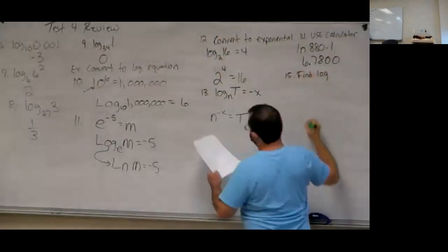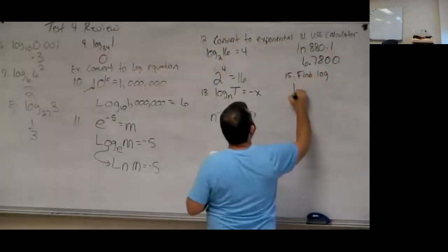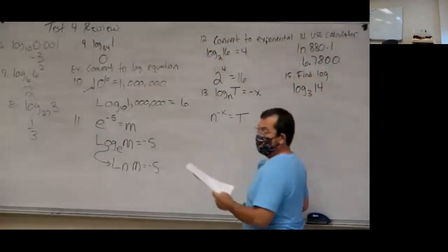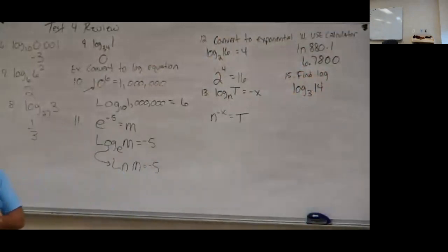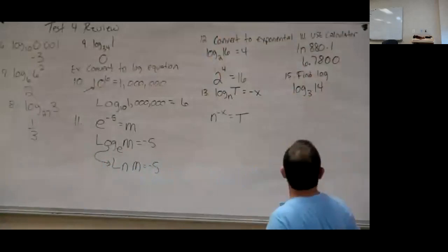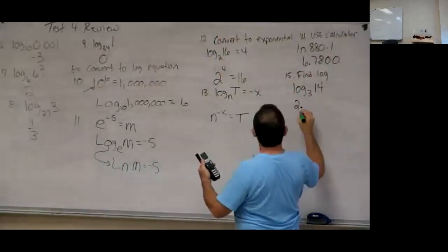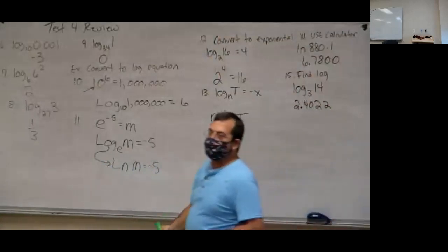Number 15: find log base 3 of 14. We have the log base feature so just use it directly. Hit the math button, arrow down to log base — option 7 — and hit enter. It brings up the log with blanks. Put 3 for the base, arrow over, and put in 14. Rounding to four decimal places, I'm getting about 2.4022.